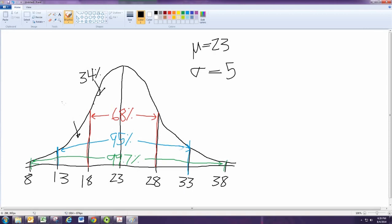So, that's the 13.5%. And then, that's 2.35%. And then, the far tail is just 0.015%.